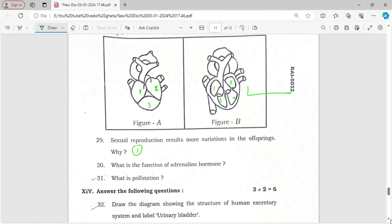What is the function of adrenaline? Adrenaline helps us to face emergency situations. What is pollination? Transfer of pollen grain from anther to stigma of a flower.